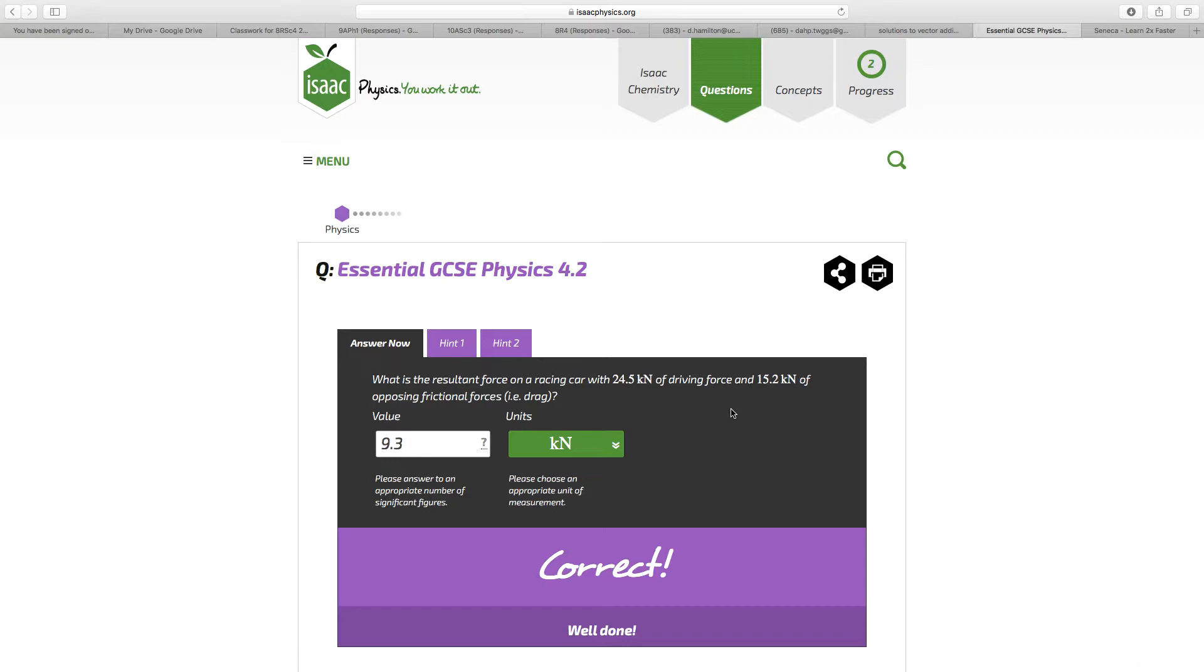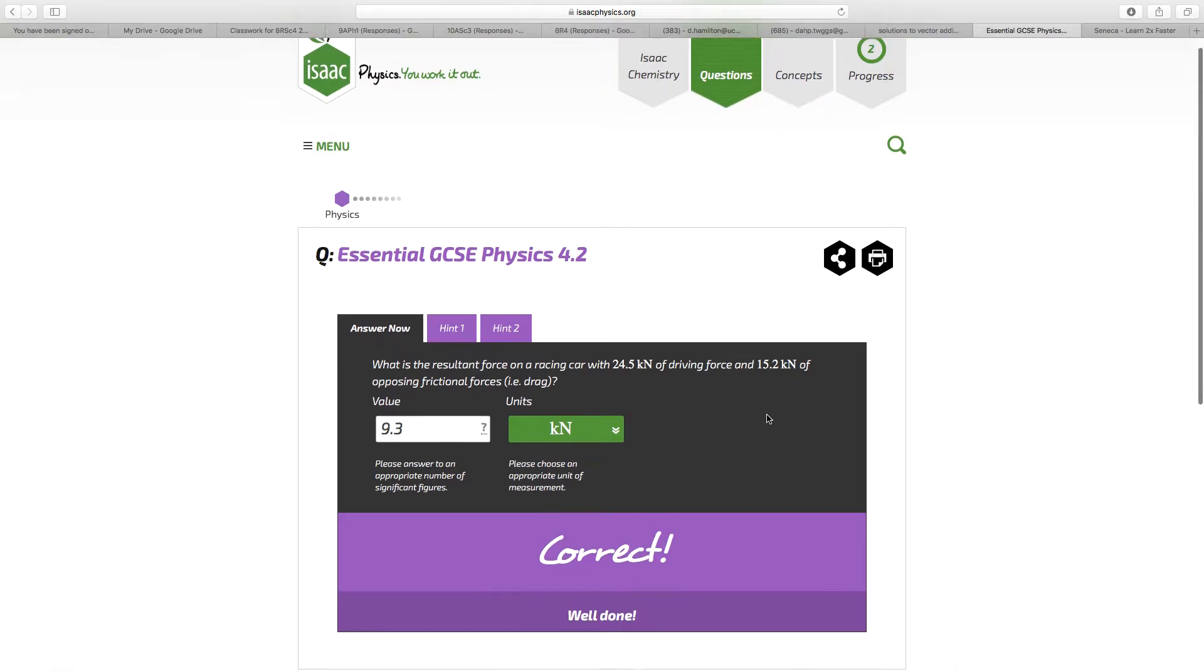4.2 then, the resultant force on a racing car, 24.5 kilonewtons driving force, and 15.2 kilonewtons opposing frictional force. The difference between those two figures, 9.3 kilonewtons.